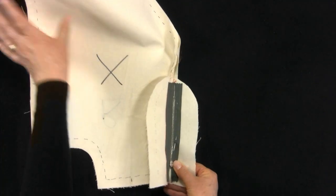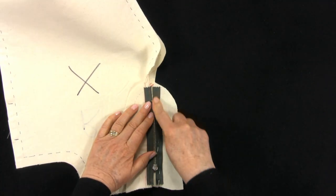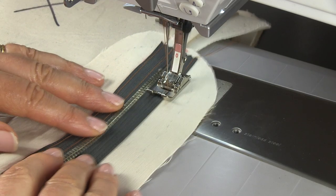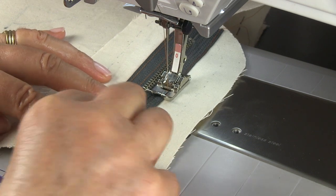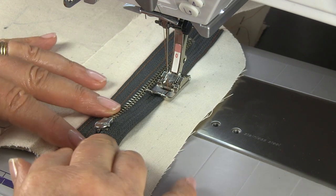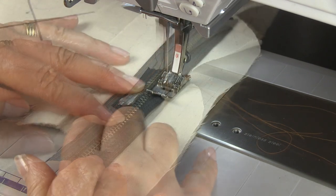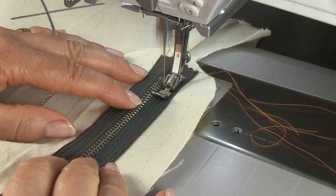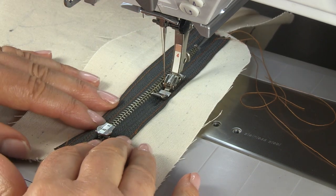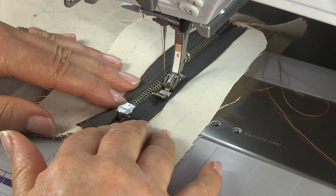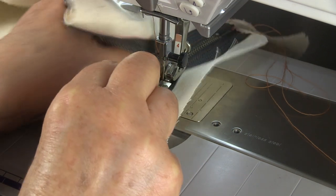It's easier to machine this side of the zip from the bottom up. Stitch the zip tape firstly near the tape edge and a second row close to the teeth as before. Open the zip to do the top.